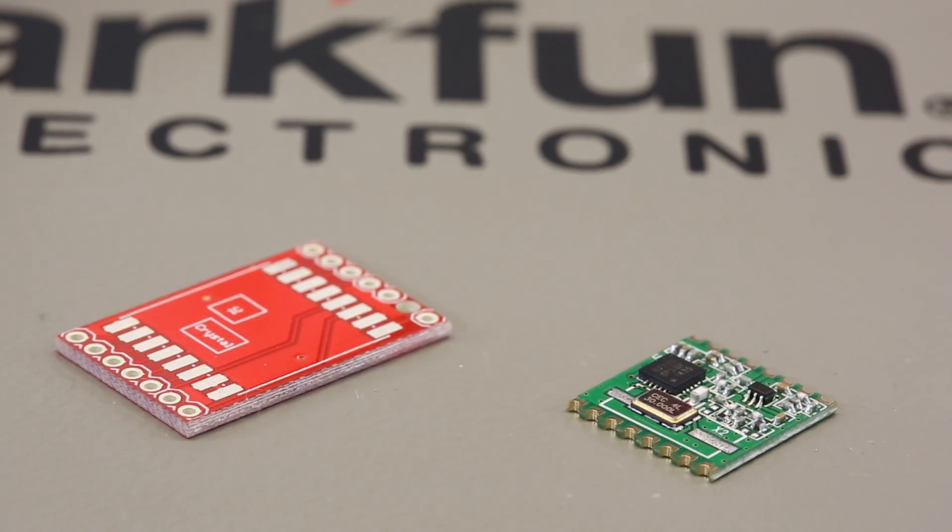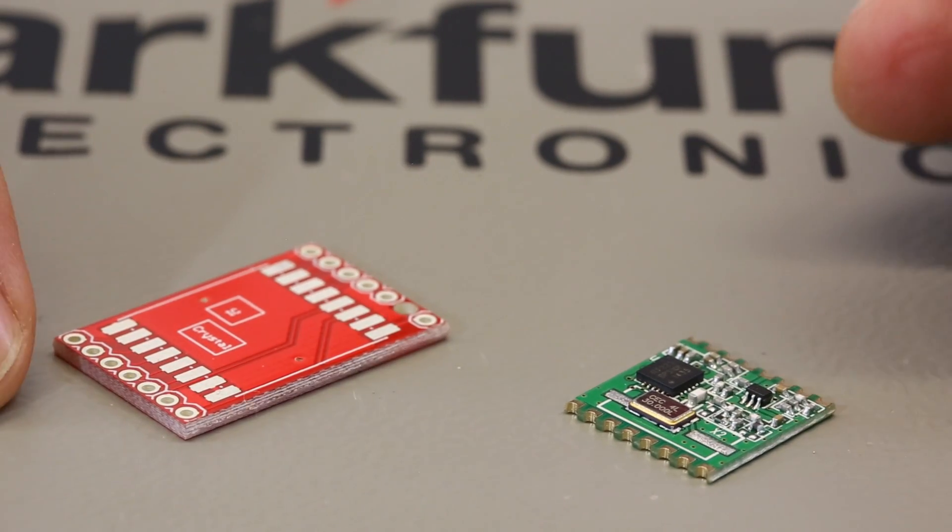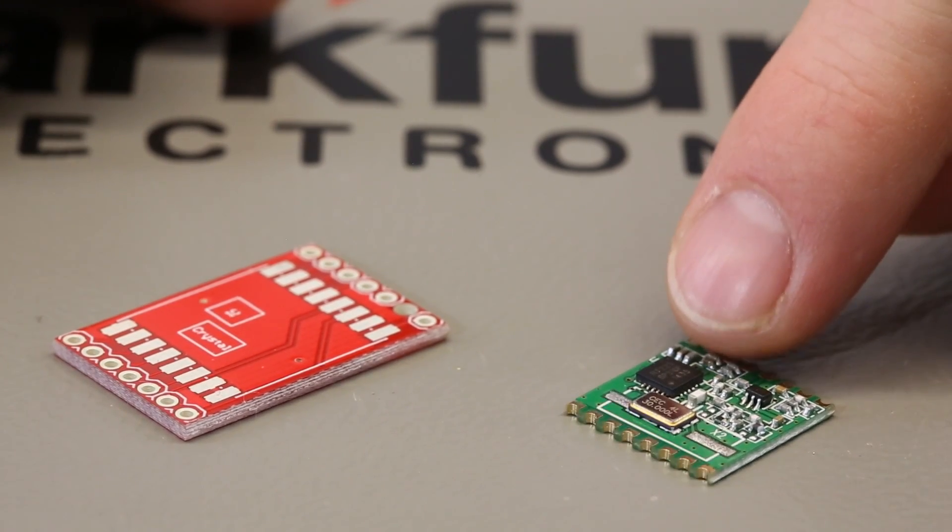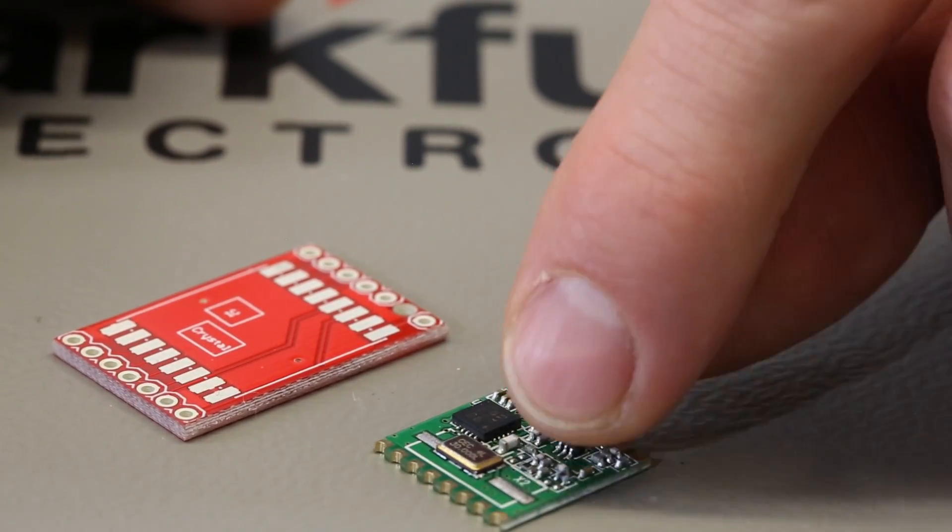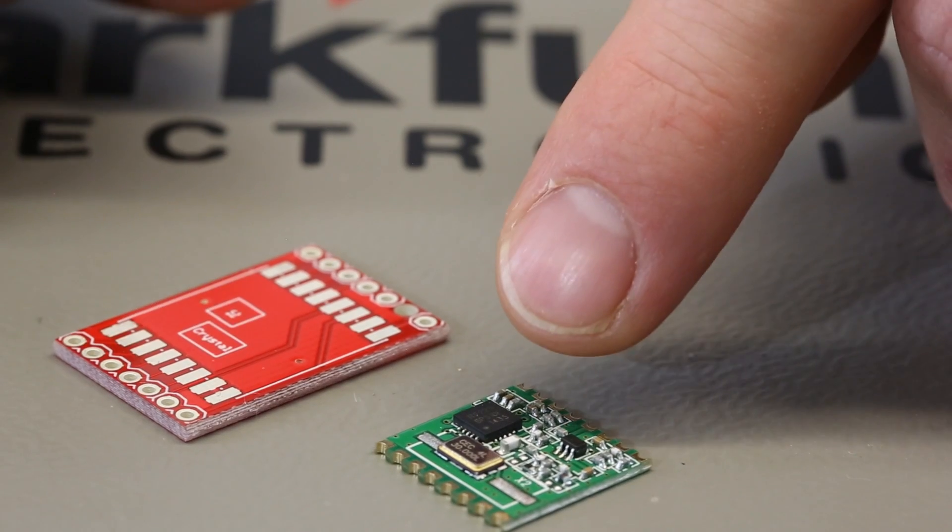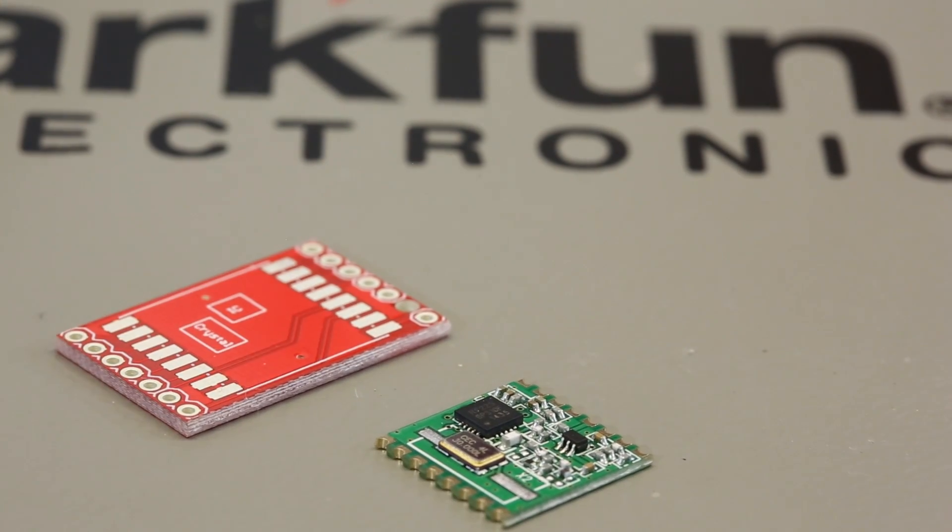Next, we need to line up the module. You'll notice that there's a marking on this breakout board that says IC and crystal. On the module, there's an IC here and a crystal on this side. So spin it around until those two things line up. In this case, we have the crystal lined up with the crystal and the IC lined up with the IC marking.